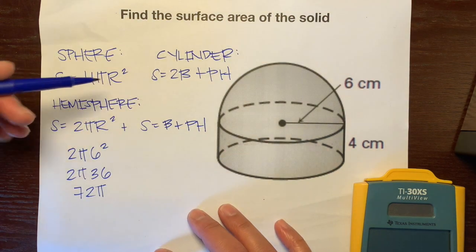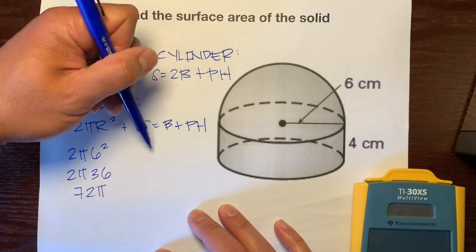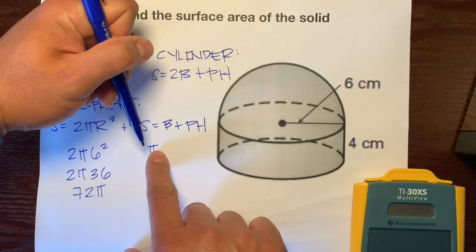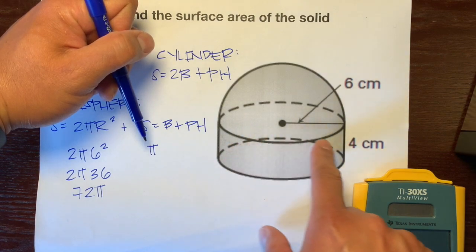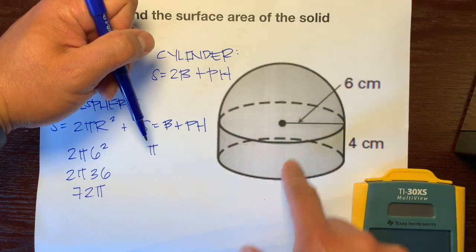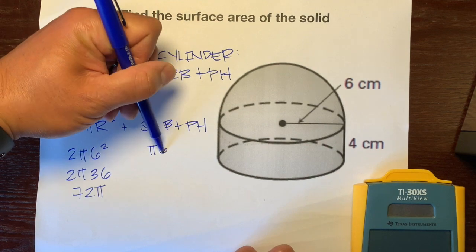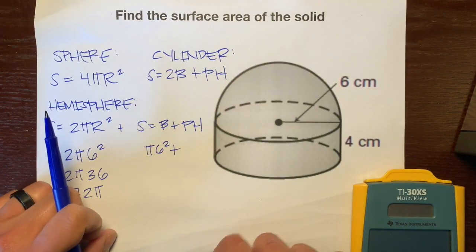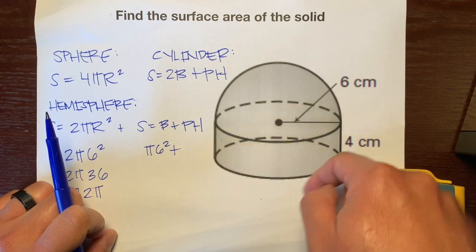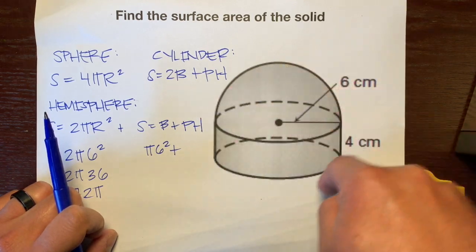We have the one base and the base of this cylinder is a circle. And the area of a circle is πr². So, I'm going to write π. And our radius for this base right here for this circle is the same as the radius up here, which is 6.